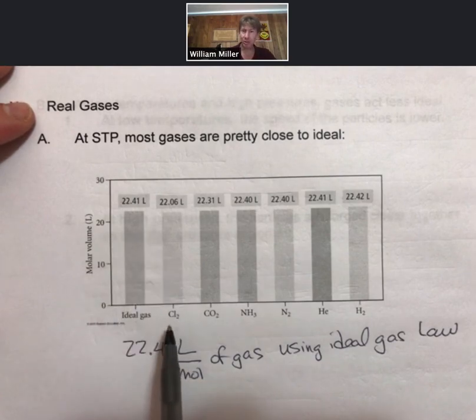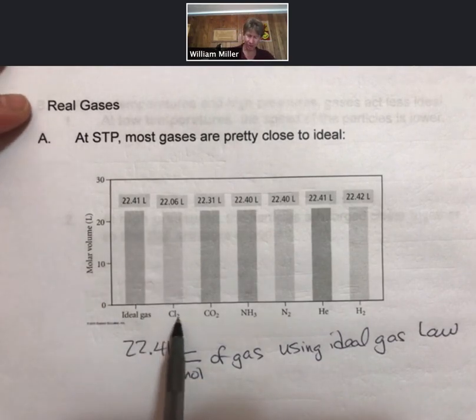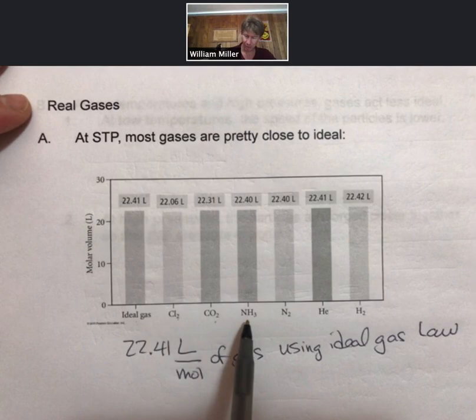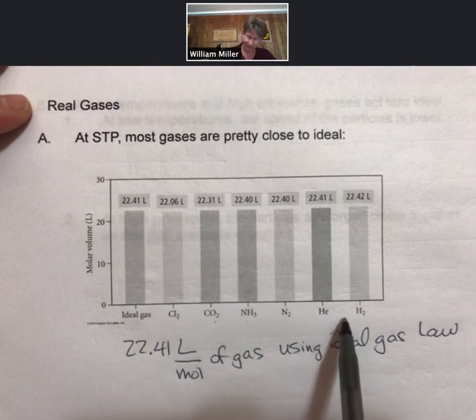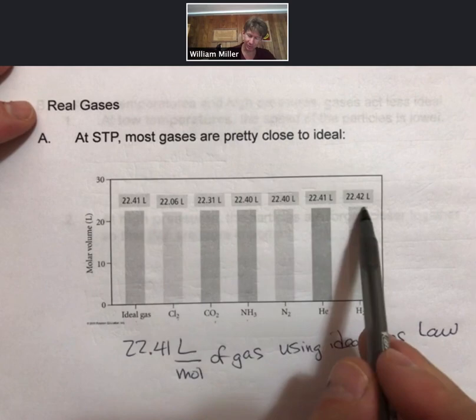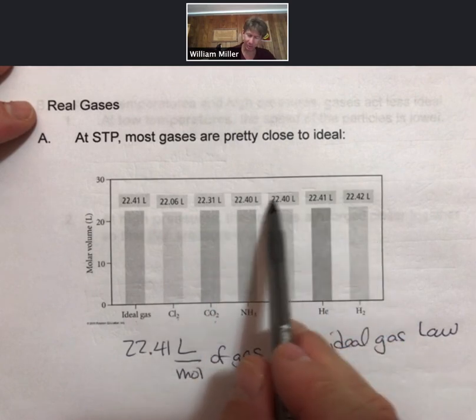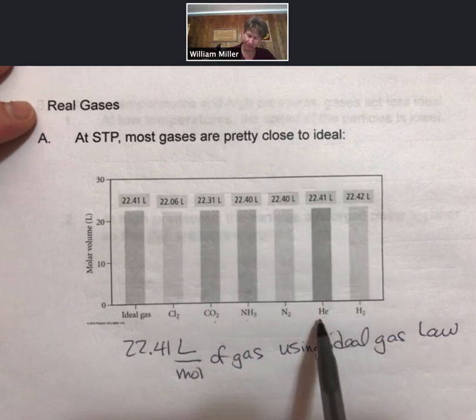If you actually do the measurements for chlorine, carbon dioxide, ammonia, or any of these gases, you will see that almost all of them are right close to 22.41, helium spot on.